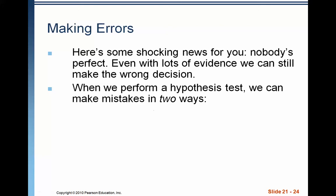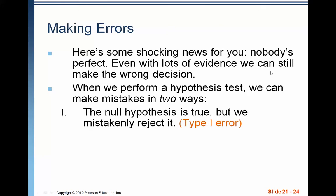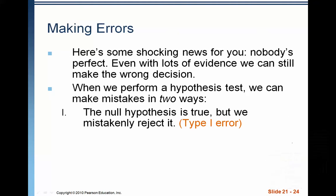When we perform a hypothesis test, we can make a mistake in two ways. The first would be that the null hypothesis is true, but we mistakenly reject it. This would be if we had a situation where we set an alpha of 0.05, and the p-value we ended up getting was 0.001 or something like that — leading us to believe that we should reject. However, as it turns out, the actual truth is that we should not have rejected. This is called a type 1 error.